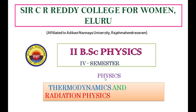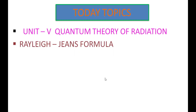Good morning everyone. Today my class is for 2nd year VRC, 4th semester for all physics combination groups. Today I am going to discuss about the Rayleigh-Jeans formula in Unit 5, that is Quantum Theory of Radiation.